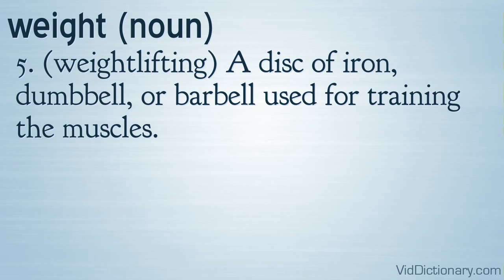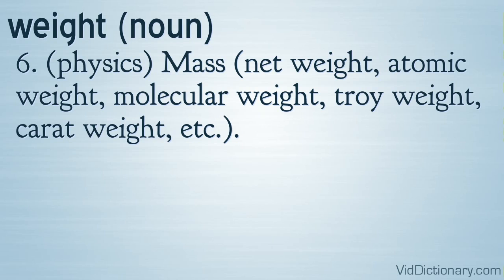Definition 5: Weight lifting — a disc of iron, dumbbell, or barbell used for training the muscles. Definition 6: Physics — mass, net weight, atomic weight, molecular weight, troy weight, carat weight, etc.